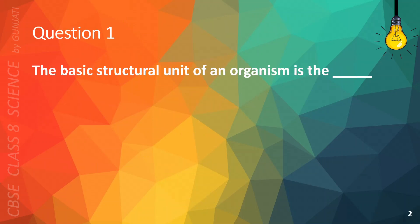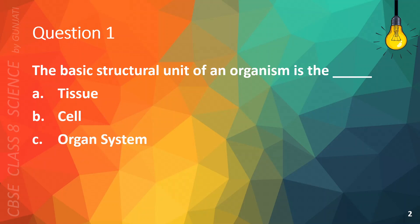Question 1. The basic structural unit of an organism is the blank. A. Tissue. B. Cell. C. Organ System. Or D. Skeleton. The correct answer is B. Cell.